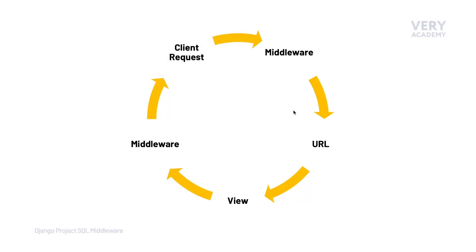An important point to plant here is that since we're going to be building middleware, in order to test that middleware we're going to need to simulate the idea of a client sending a request to the application. If we were just to test the view and the URL, we would miss the step of Django passing the request through the middleware — something to think about and revisit later in this course.